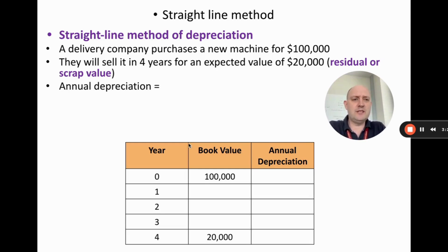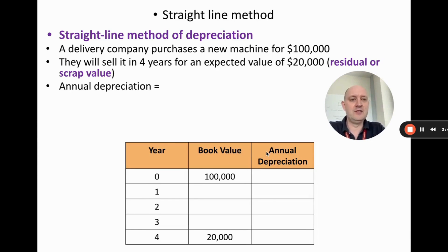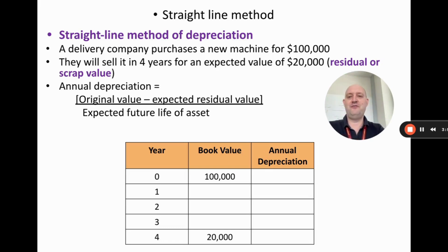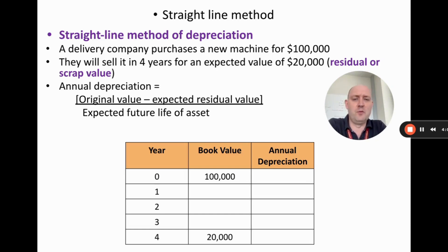We can put this into a table. They're going to have this asset for four years: years one, two, three, and four. We've got the book value — the value of the asset at that time — and the annual depreciation, which is how much the asset goes down by during that year. The formula is: annual depreciation = (original value − expected residual value) ÷ expected future life of the asset. This formula might seem like common sense, or it might seem complicated — let's do an example.